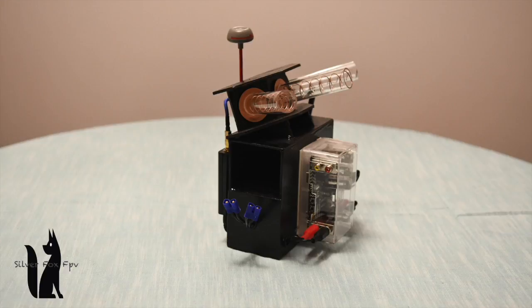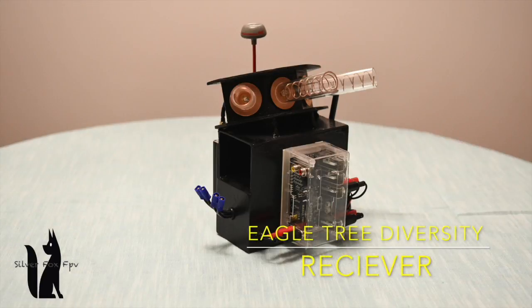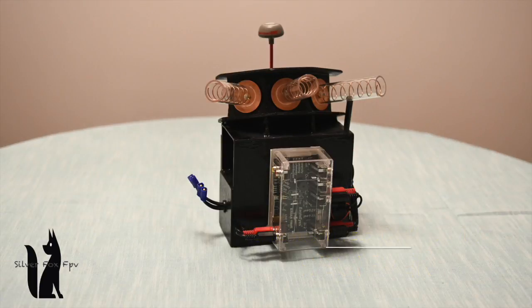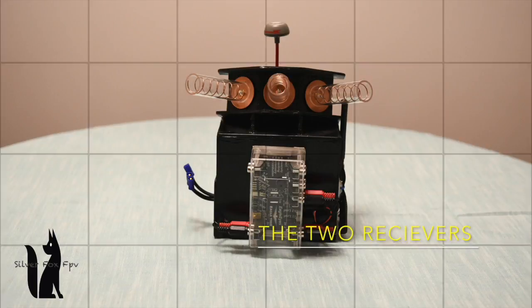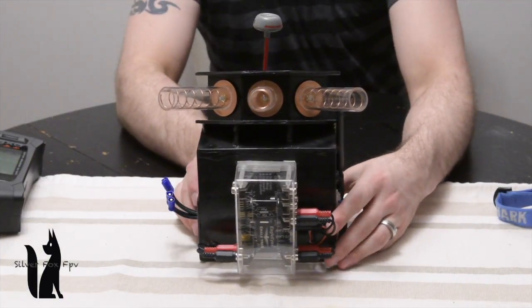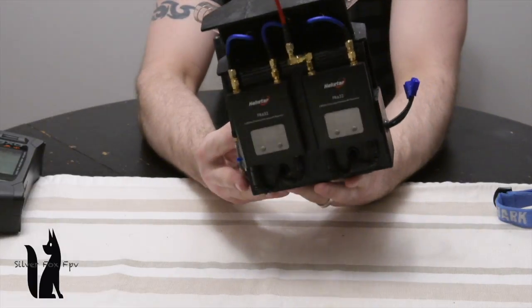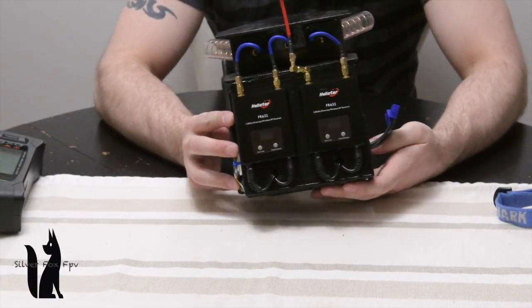So I built a little box and I've combined two diversity receivers punched into an Eagle Tree Eagle Eyes diversity receiver that brings it all back to your goggles. Just a little bit about it. I built a box to hold it all together.